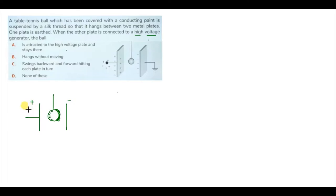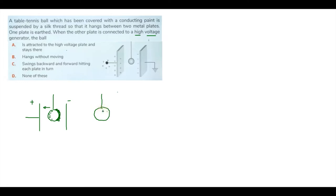Since the high voltage generator is connected, the negative charge on the ball is attracted toward the positive plate. So the ball moves in that direction, hits the positive plate, and all the negative charge is dumped and neutralized. Now this particular sphere contains only positive charges.